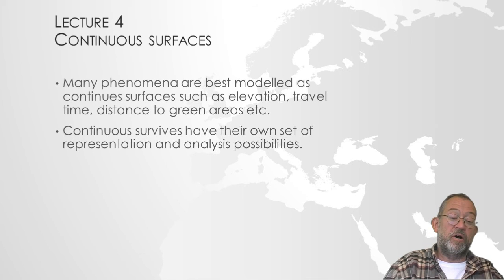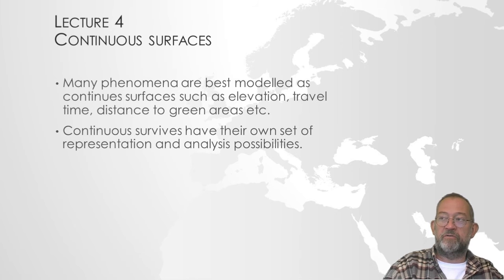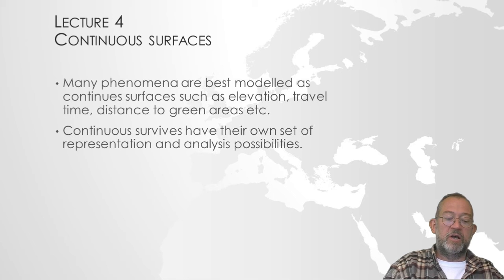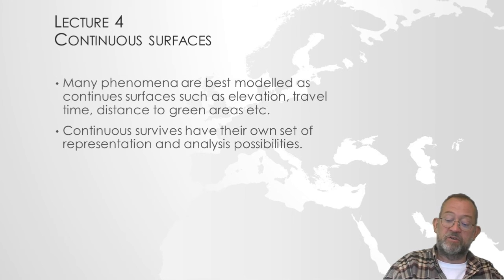Lecture four is about continuous surfaces. Until now in this course we'll have been talking about objects — a building, a road, and so on. But there are lots of things that are best modelled as a continuous surface: temperature, elevation, distance to green areas. All of these things are continuous in their nature. Continuous layers or phenomena have their own ways of being represented, so we're looking at how they can be represented and what analysis possibilities exist for things that are continuous.